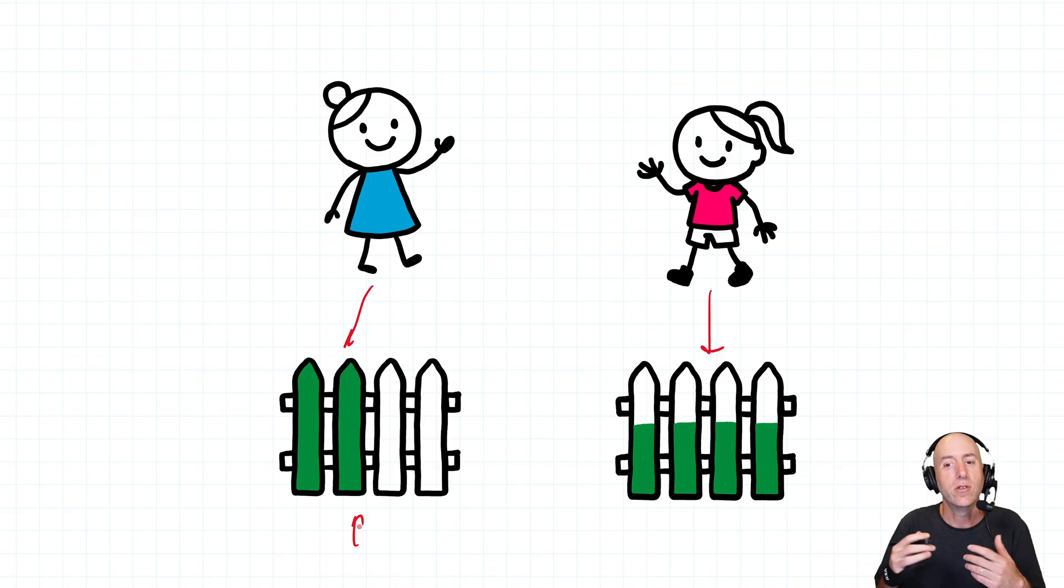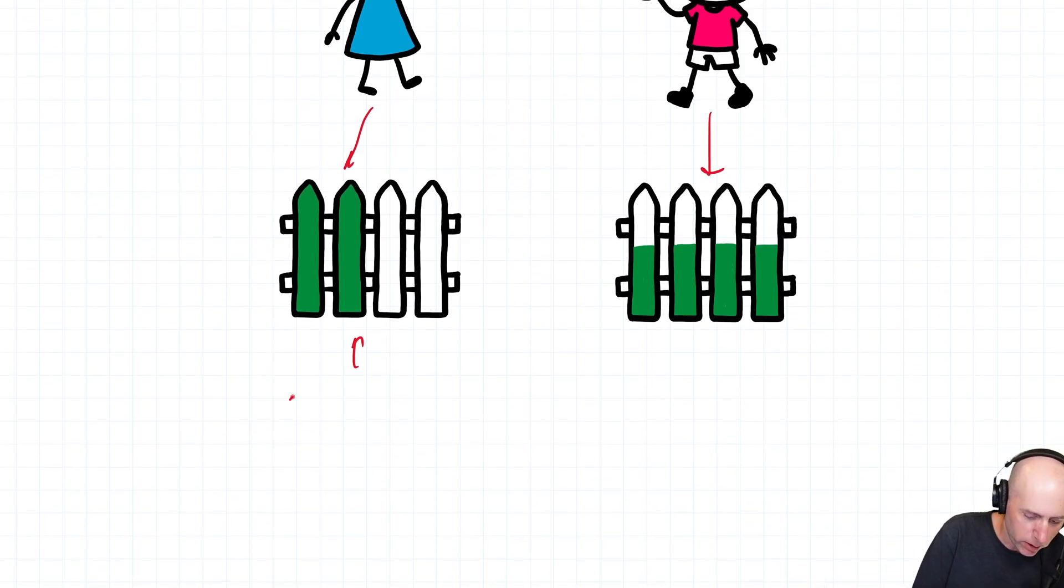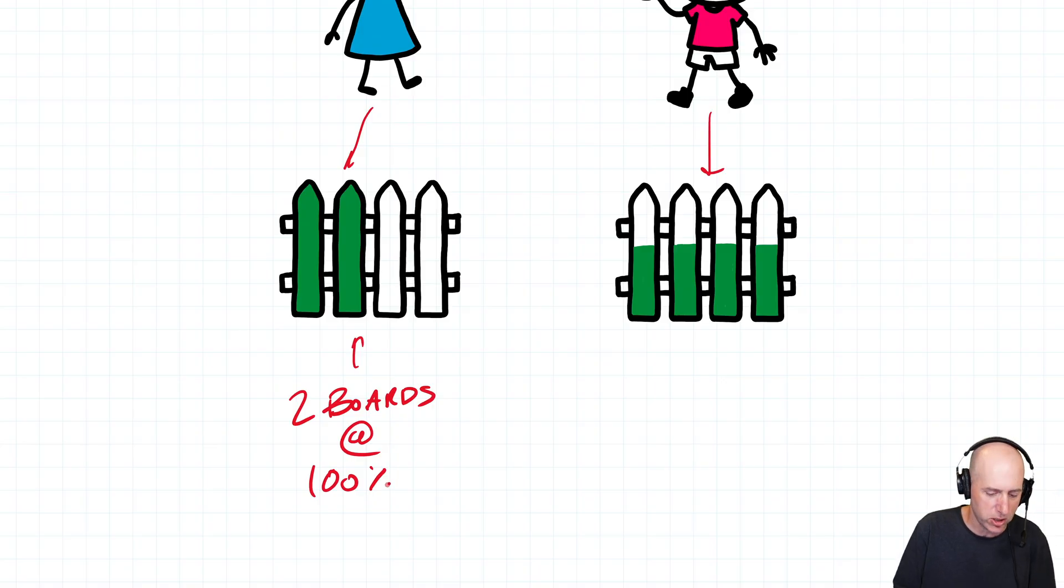Now, obviously you and I can see, we're going to be much more fair than their father. And we would look at this and go, they kind of did the same amount of work. Didn't they? Gabby had two boards that were 100% finished. At 100% completion means she did two boards.